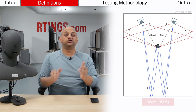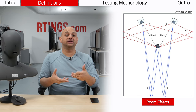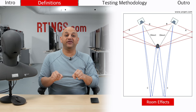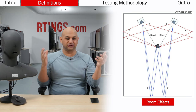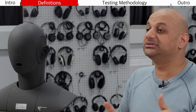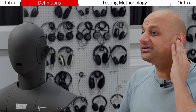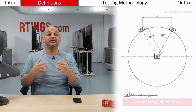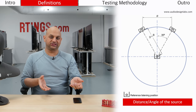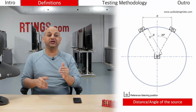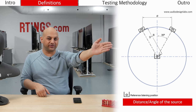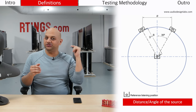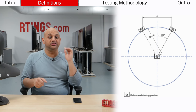The first one is room effects. With loudspeakers, music is happening in a room where the sound is affected by reflections off the walls and other surfaces, as opposed to headphones where the music is happening at or in your ears. The second one is the distance and angle of the source. Loudspeakers are positioned out in front at a 30 degree angle, but headphones are usually at a 90 degree angle and very close to the eardrum.